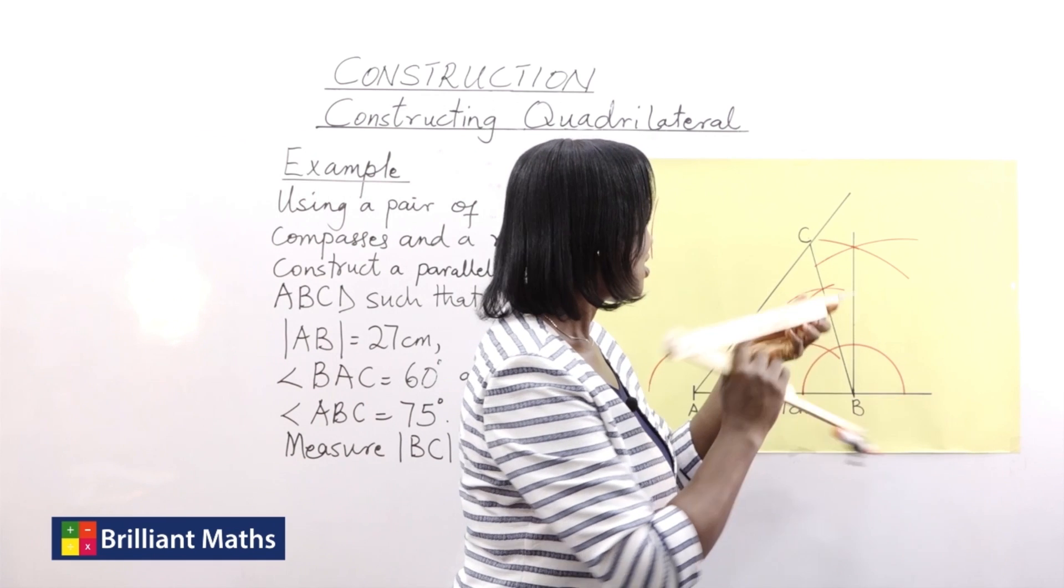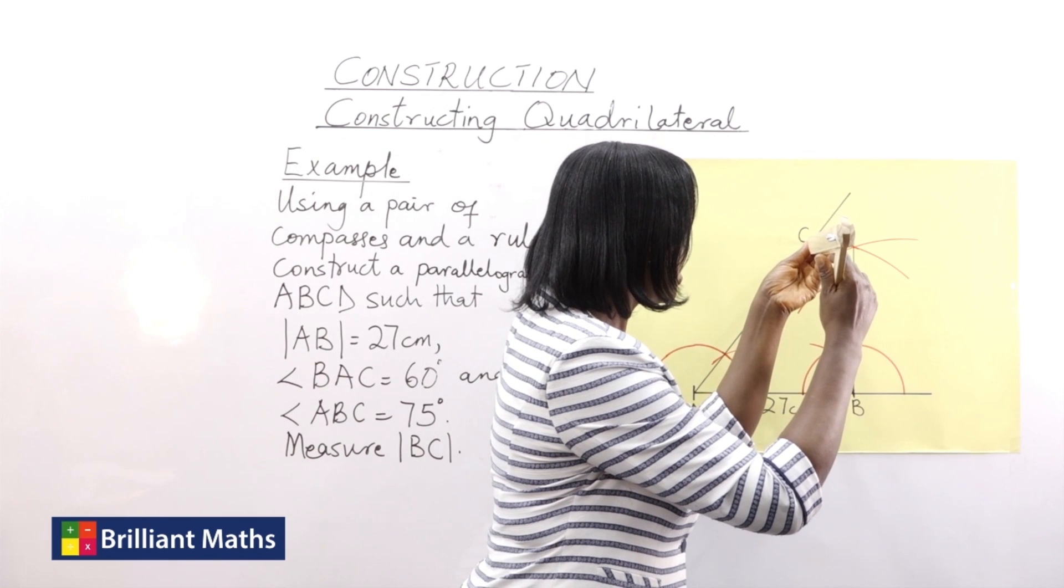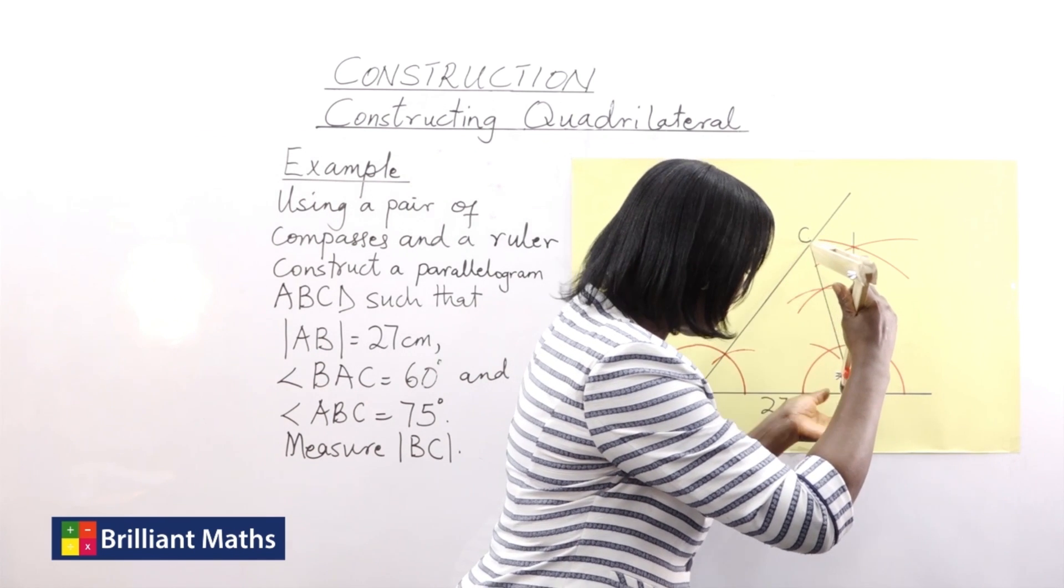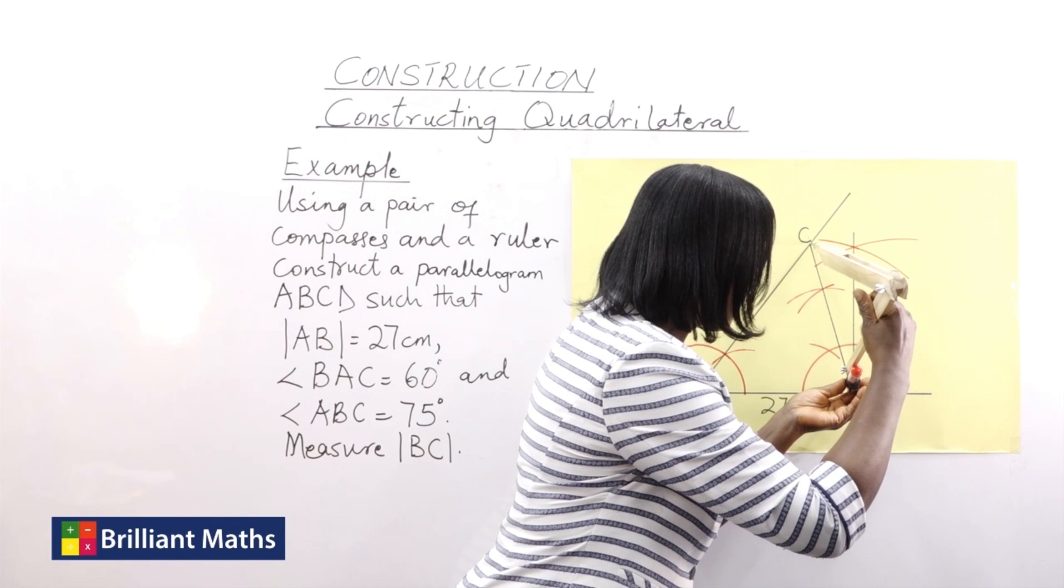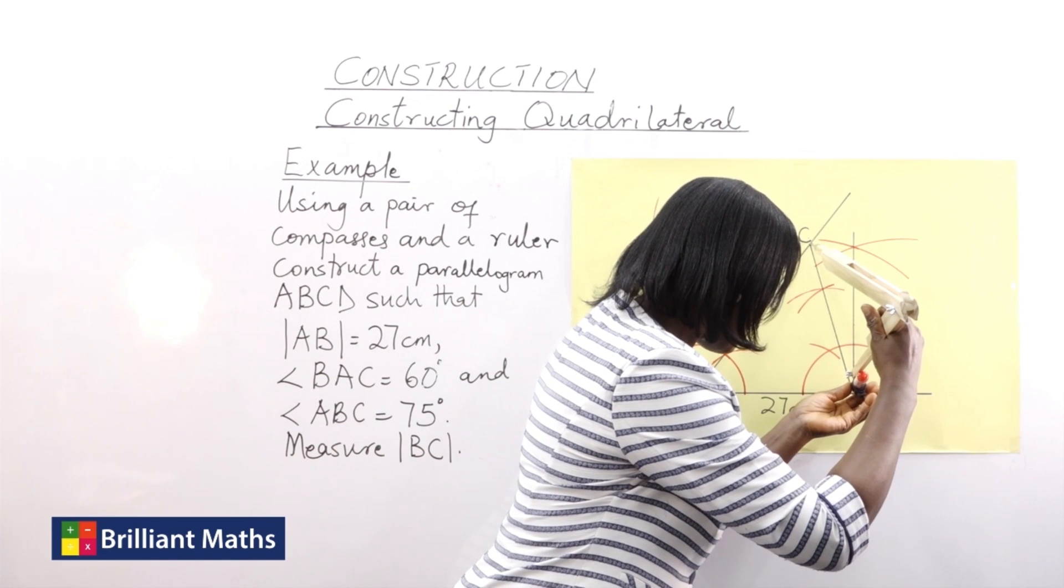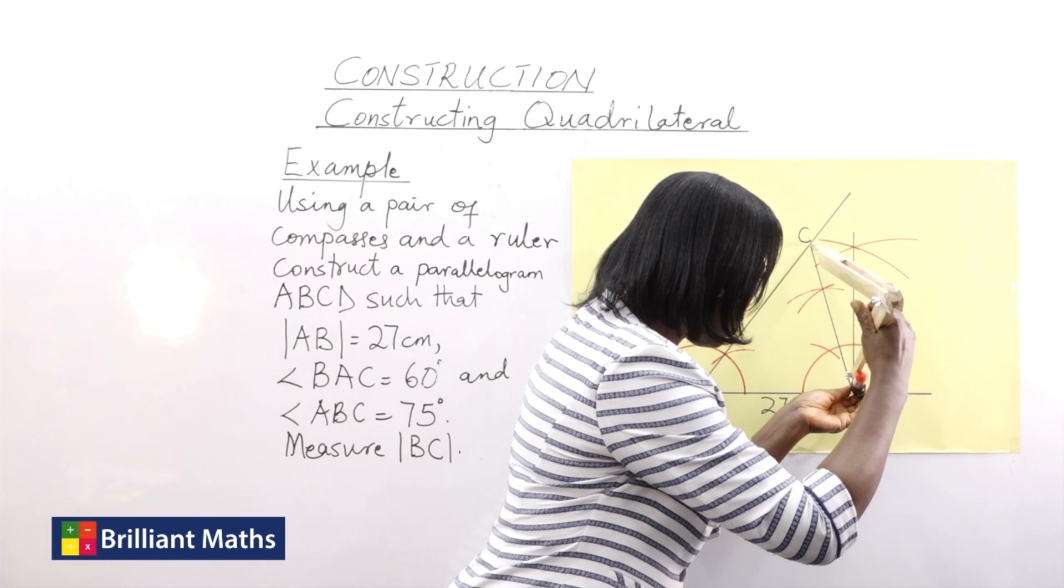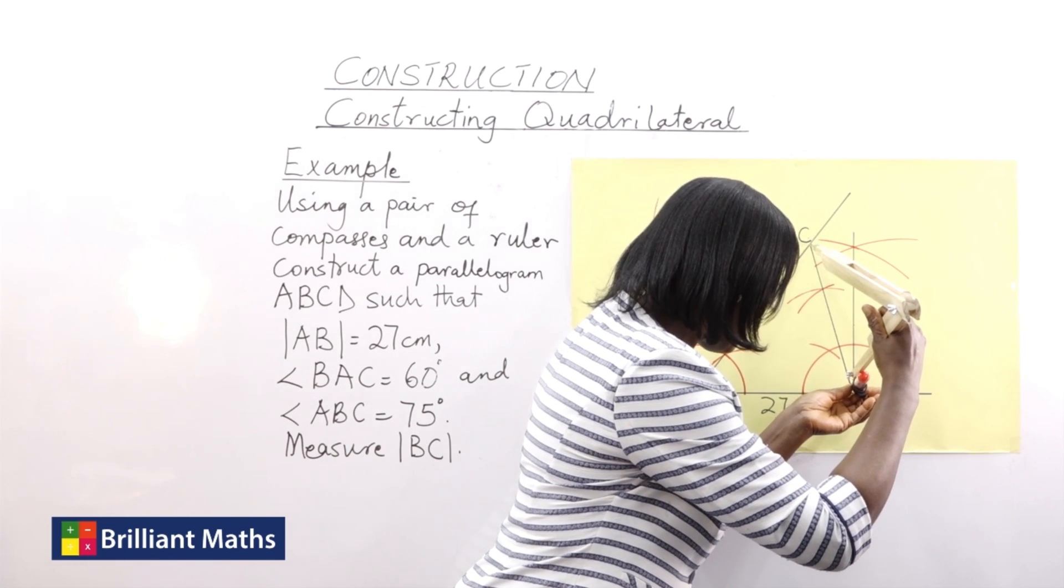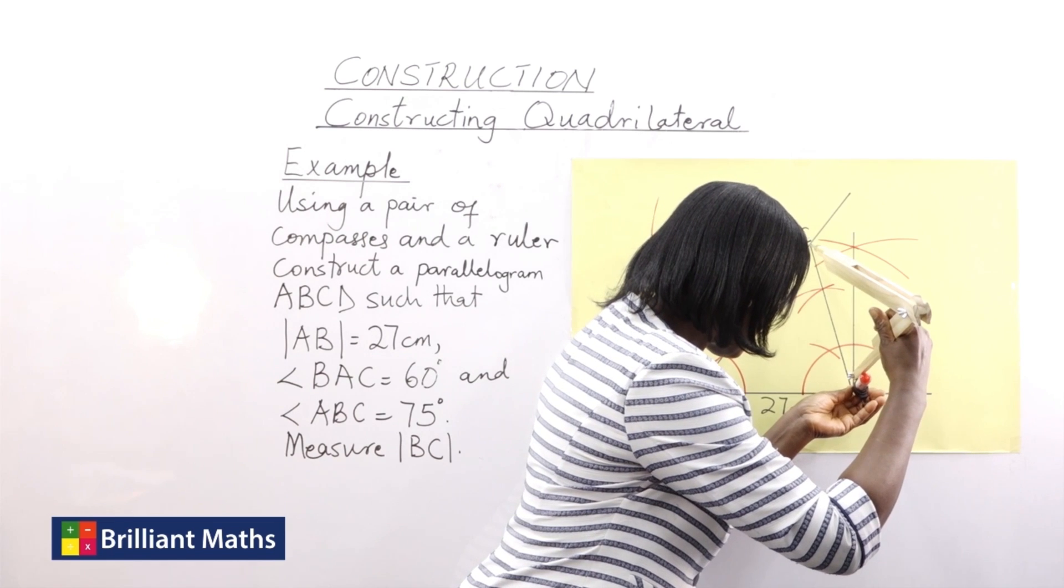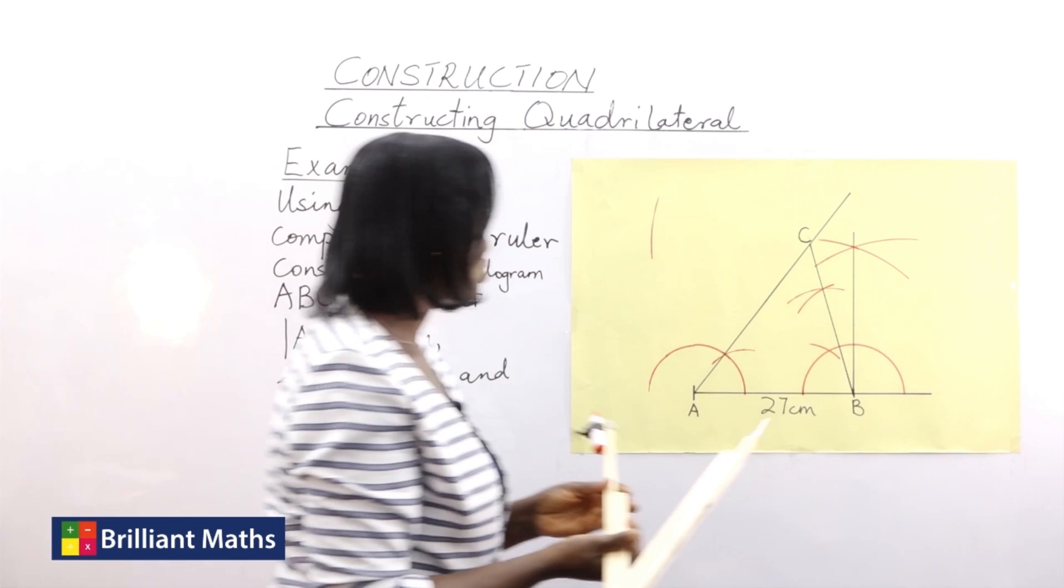so that it intersects this other arc and that will be my point D for the parallelogram. So what is that length? At point C, take your time to get the actual points. All right, that's what we have.